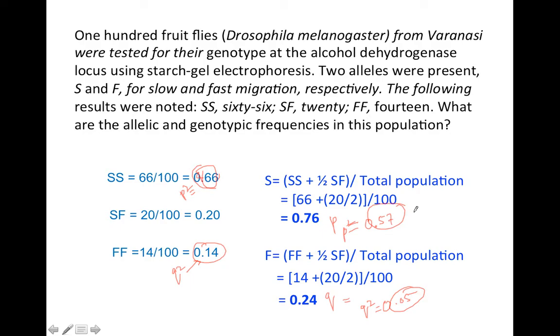Here q squared is 0.14, but calculated q squared is 0.05. Here p squared is 0.66, but calculated p squared is 0.57. This means that this population does not follow Hardy-Weinberg equilibrium. One of the assumptions of Hardy-Weinberg equation is that the population size should be large, almost infinitesimally large.